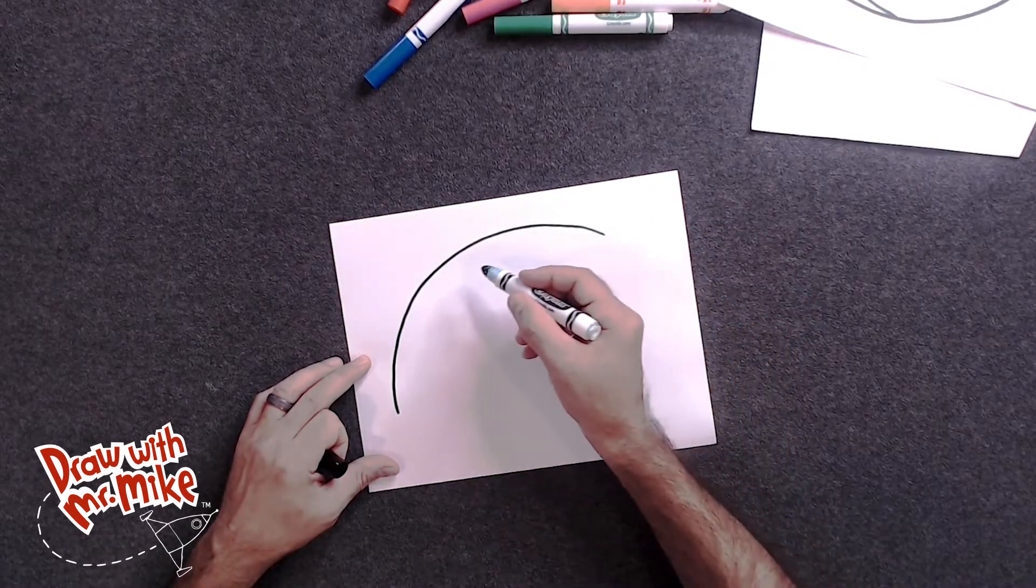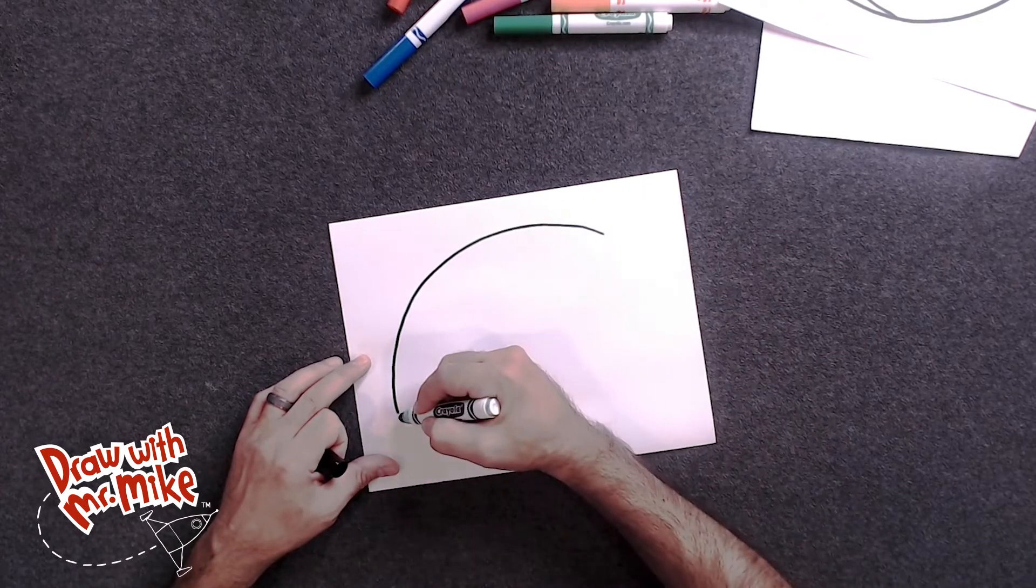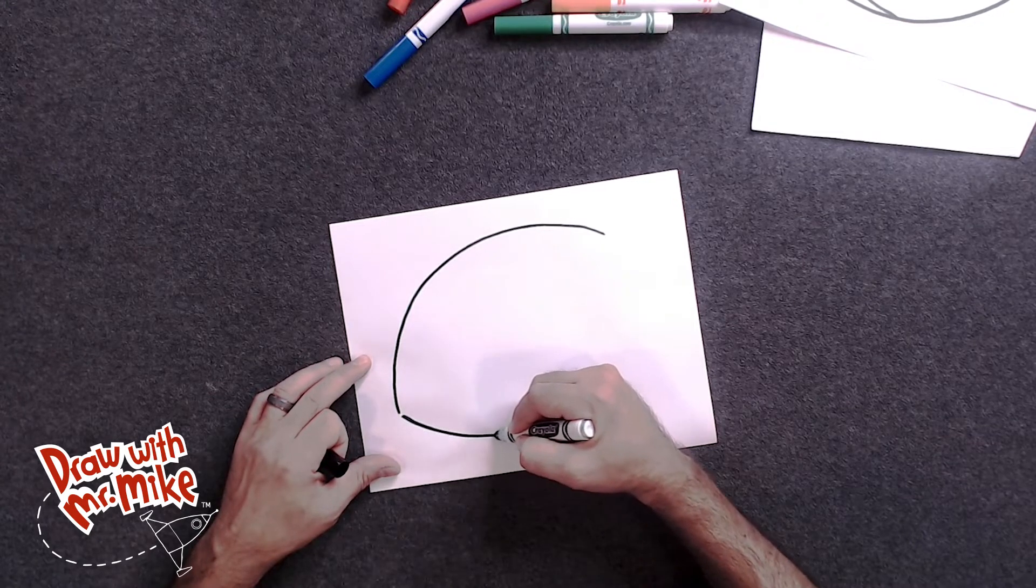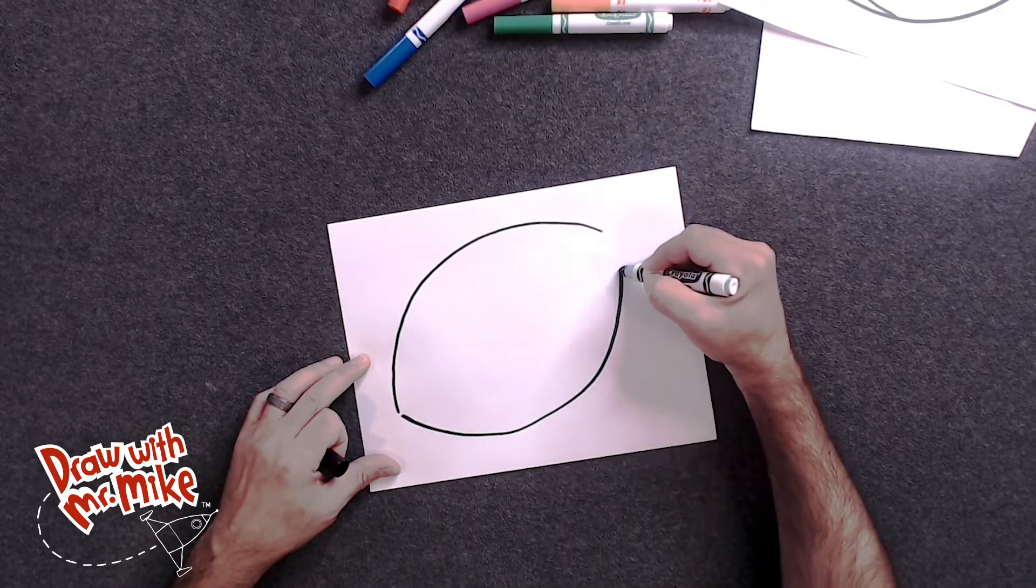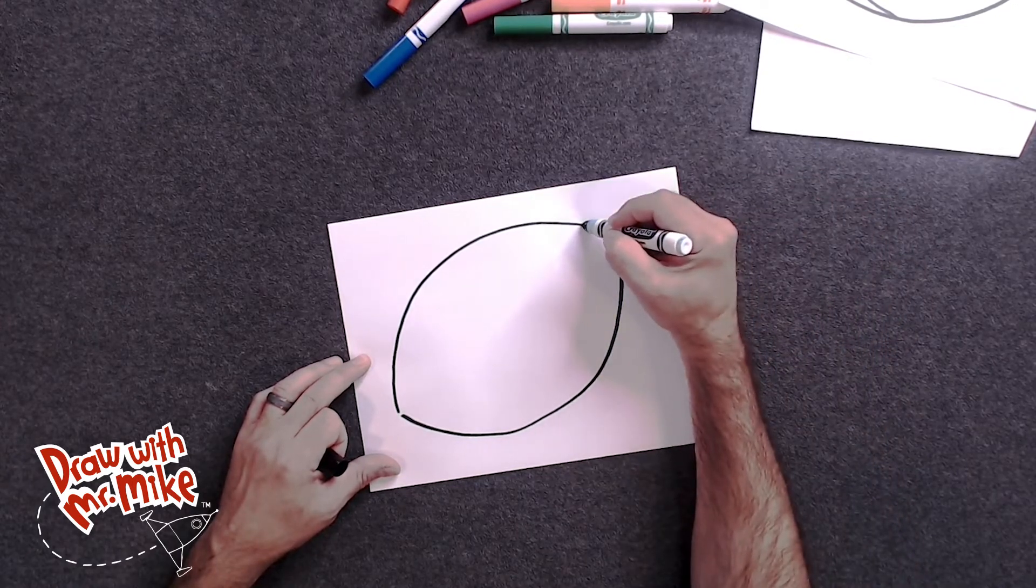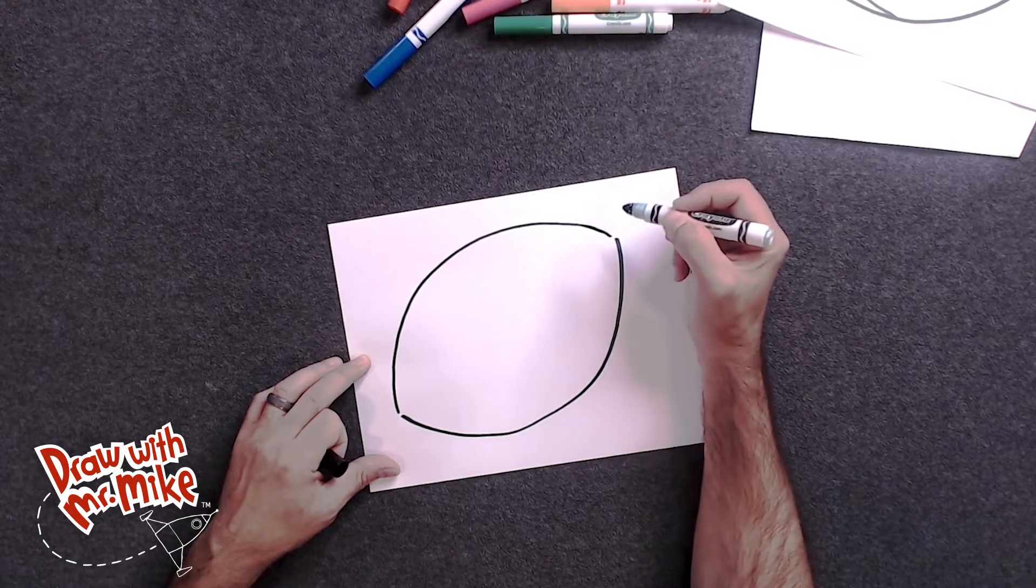And now we're gonna do the same type of arc except we're gonna have it go opposite on the bottom. So right here, start here and around. And this looks like a nice football shape. Now I'm gonna extend this arc up here just a little bit more to get it closer.